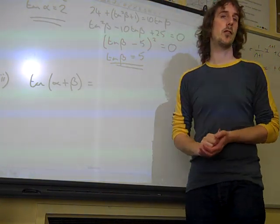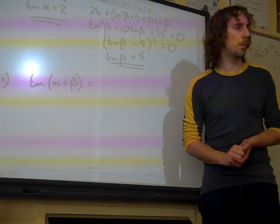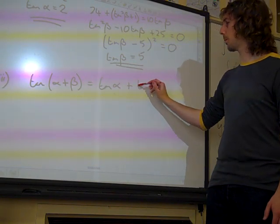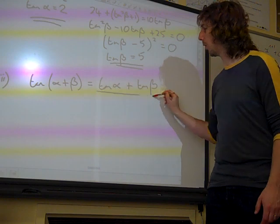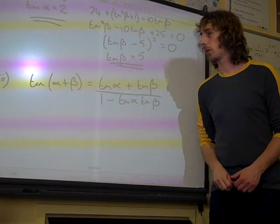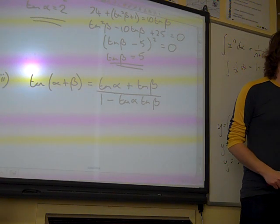According to your formula sheet, tan alpha plus beta, which is tan a plus b, isn't it, on the formula sheet? That is tan a plus tan b all over 1 minus tan a tan b. So we're just reading that straight out of the formula booklet.